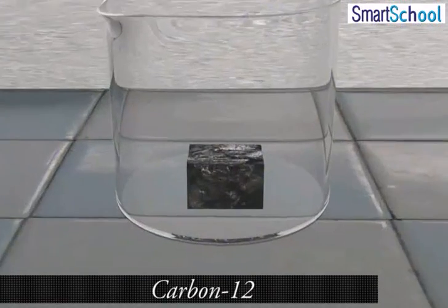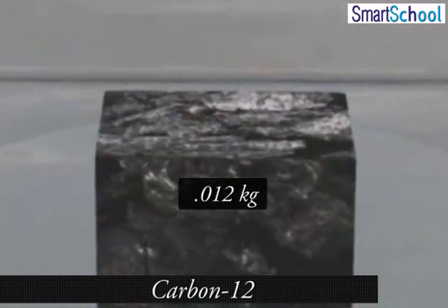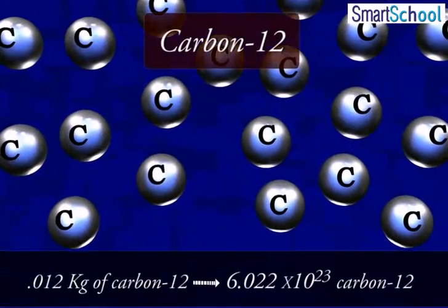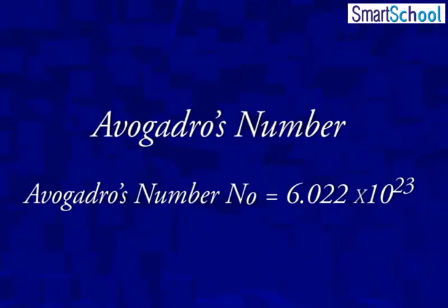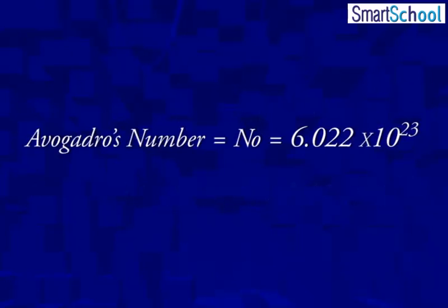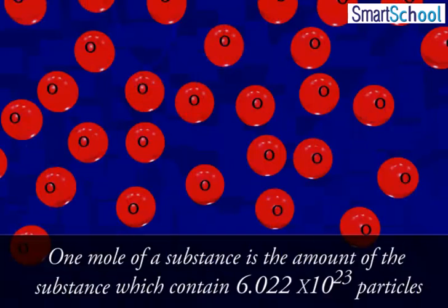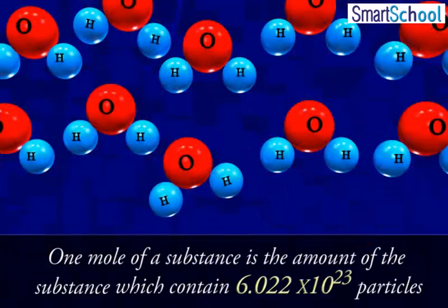Experimentally, it has been found that 0.12 kg of carbon-12 contains 6.022 × 10²³ carbon-12 atoms. So, 1 mole of a substance is the amount of the substance which contains 6.022 × 10²³ particles.